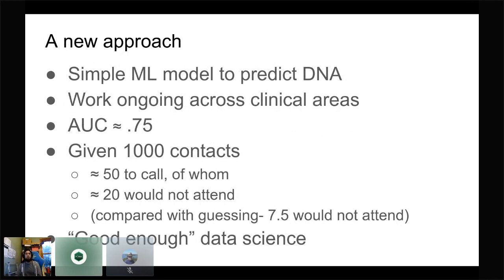This project is deliberately simple because I'm working on the culture here, and I didn't want to do that in a complicated way — that might be too much learning all at once. Basically, it's a very simple machine learning model. The idea is: given a set of appointments at a clinic, who's going to come and who isn't? That question is of great interest to us for several reasons.